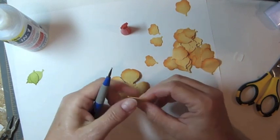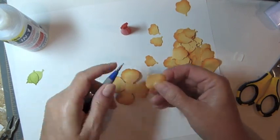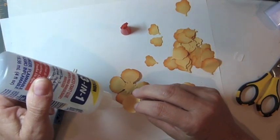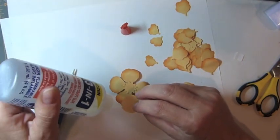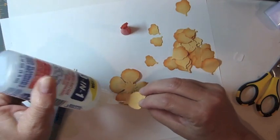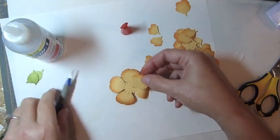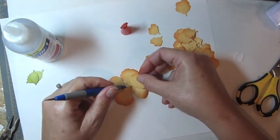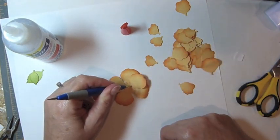To begin the next layer of petals, curve the outer part of the petal down and the tip up. Apply adhesive to the back side and adhere to the petal base. Position the petal so that it overlaps a gap between two petals of the first layer.